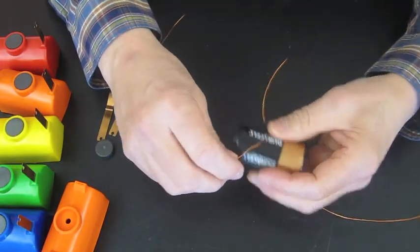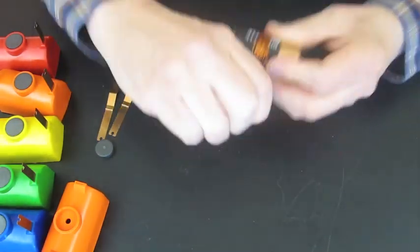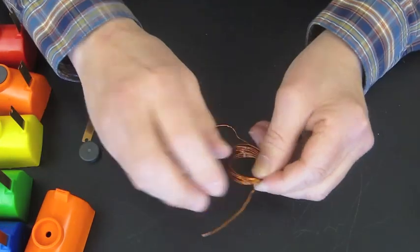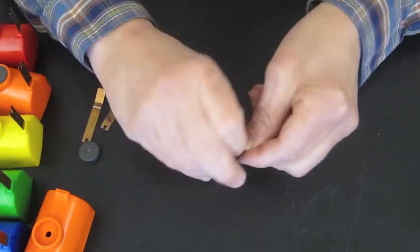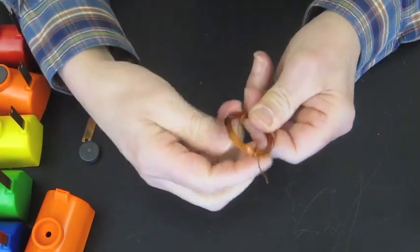Now to make the coil, the wire is simply wrapped around the battery about eight or nine times. The ends of the wire are then wrapped around the coil, both sides. That's going to hold it together.